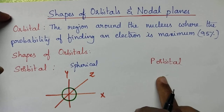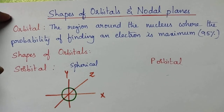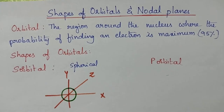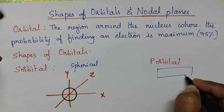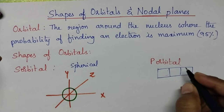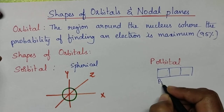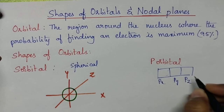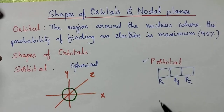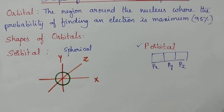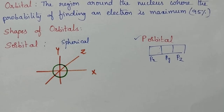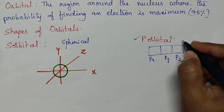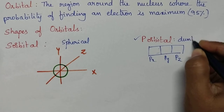Coming to the P orbital, it is having 3 degenerate orbitals, namely Px, Py and Pz. That means P orbital is 3-fold degenerate. The shape of the P orbital is dumbbell shape.